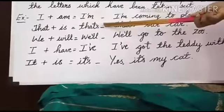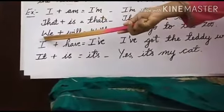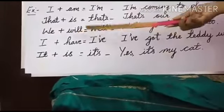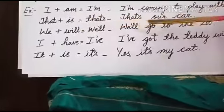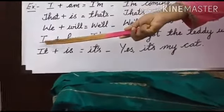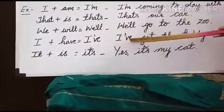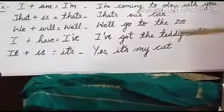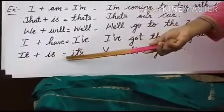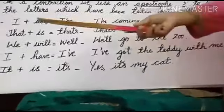For example: That's our car. In the same manner, 'we' plus 'will' is equal to 'we'll'. For example: We'll go to the zoo. The next example: 'I' plus 'have' is equal to 'I've'. For example: I've got the teddy with me. Next one: 'it' plus 'is' is equal to 'it's'. For example: It's my car.